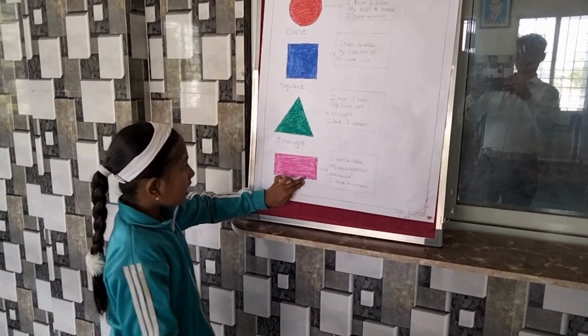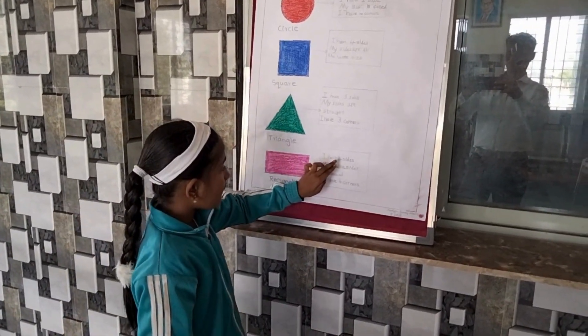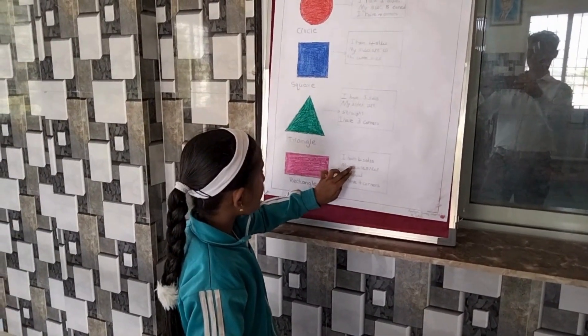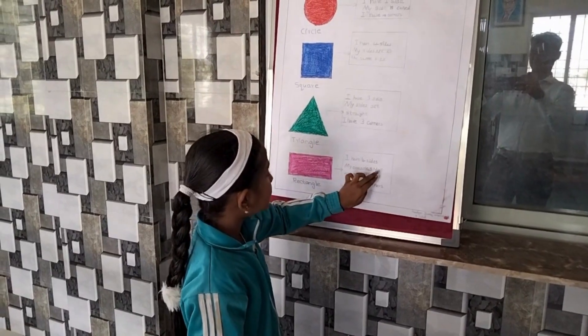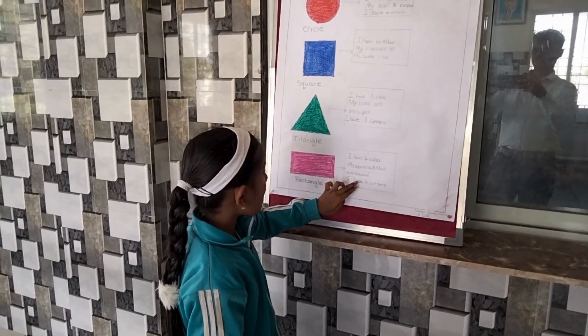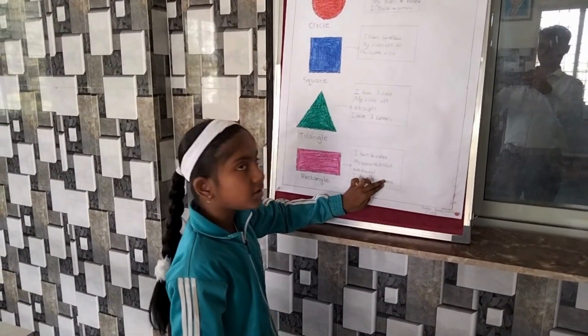I have four sides. My opposite sides are equal. I have four corners.